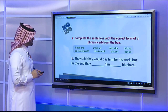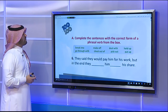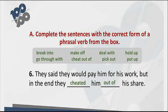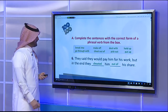Sentence six: 'They said they would pay him for his work, but in the end they ___ him ___ his shares.' They promised to pay him but didn't — they prevented him from getting his share. The phrasal verb with this meaning is 'cheat out of': they cheated him out of his money, meaning they prevented him from receiving it.